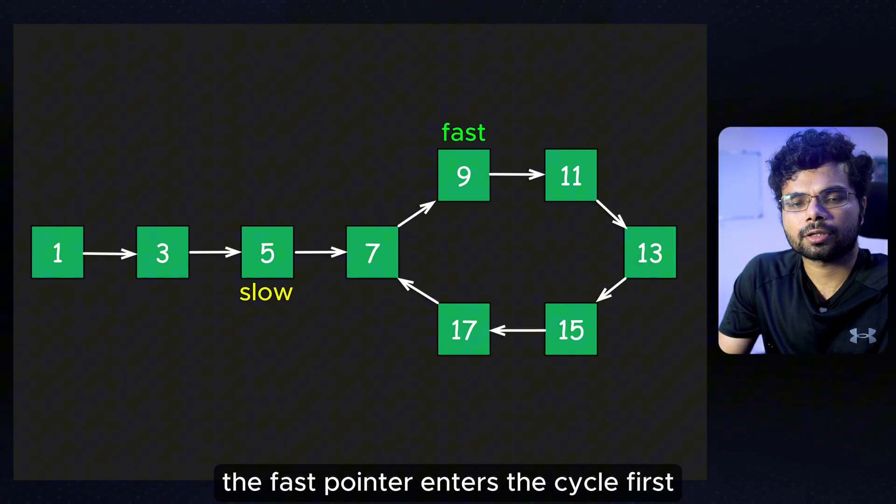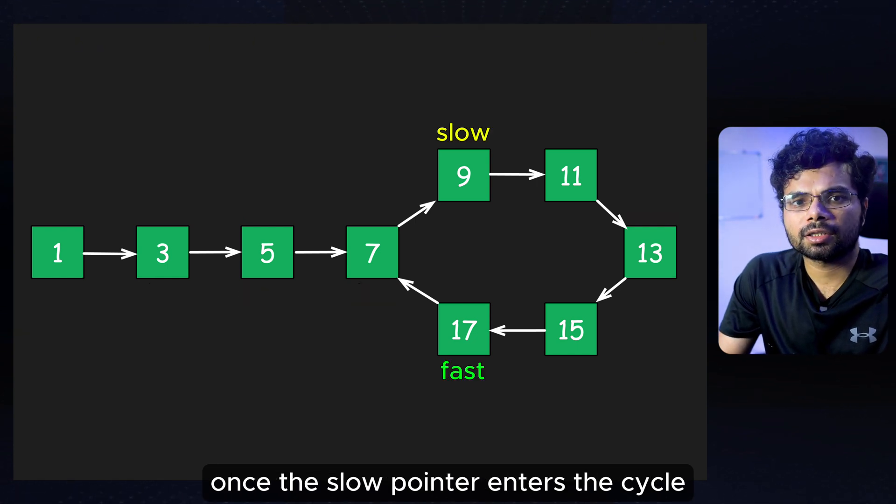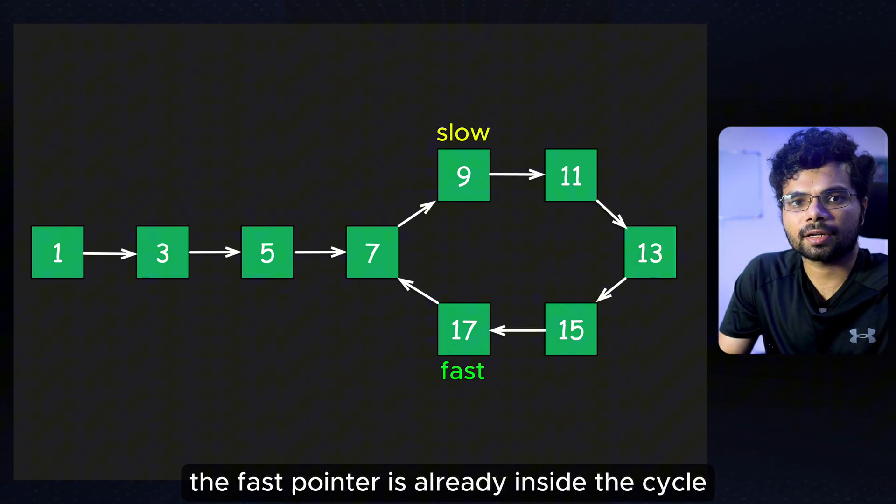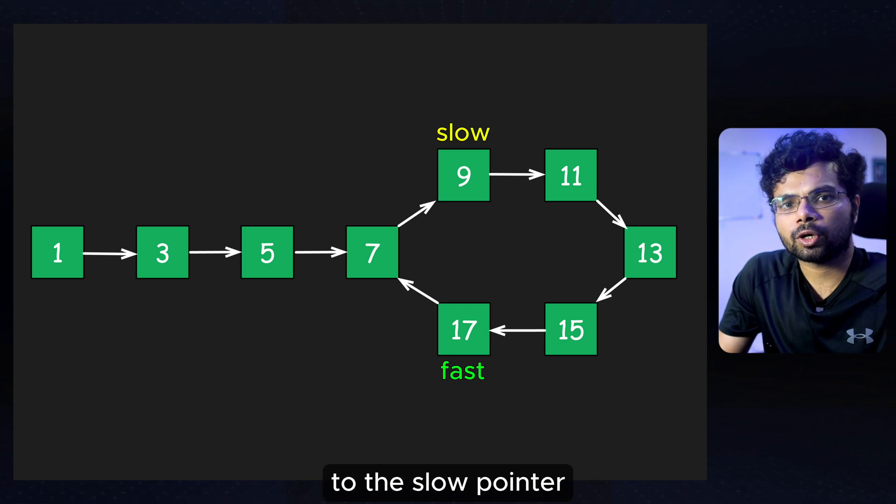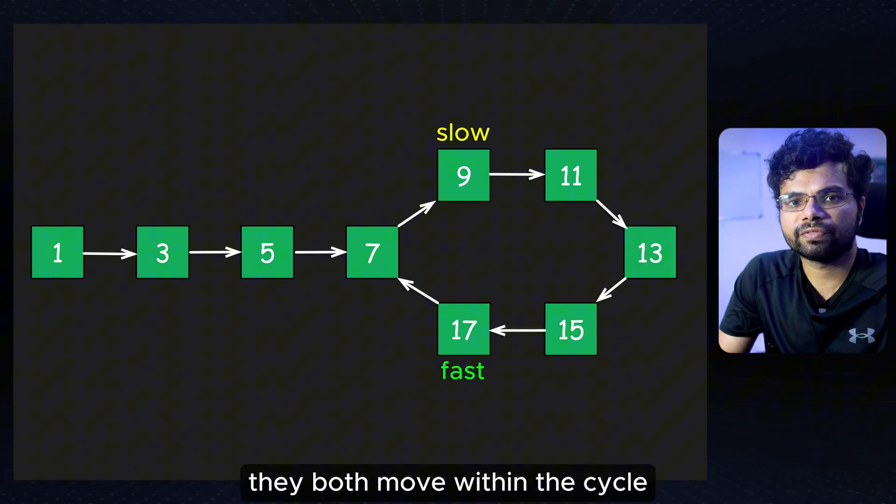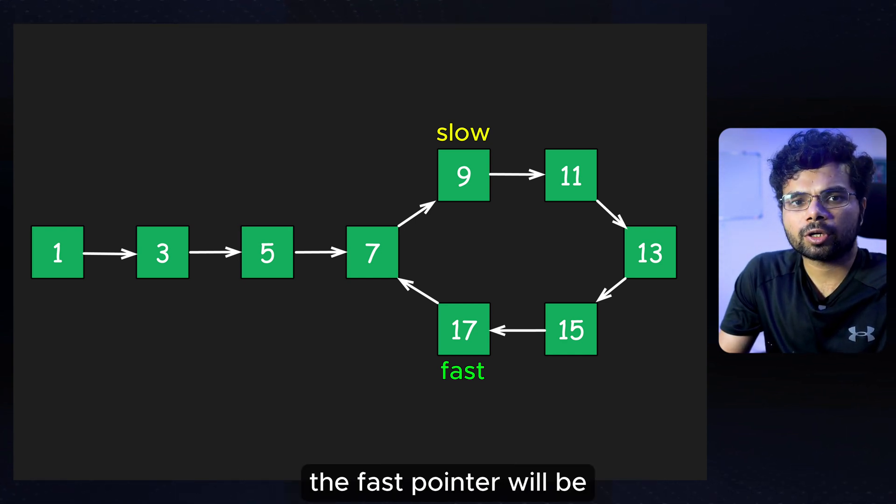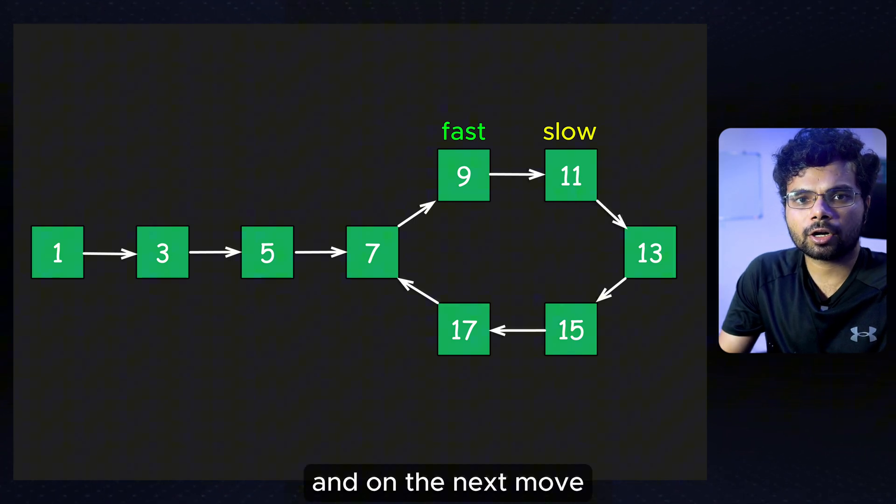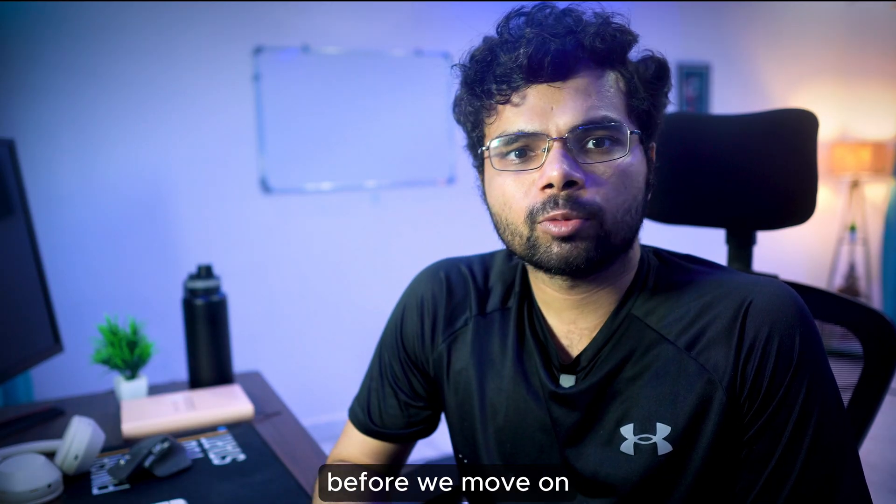The fast pointer enters the cycle first. Once the slow pointer enters the cycle, the fast pointer is already inside the cycle. The fast pointer gets closer to the slow pointer by one step each time they both move within the cycle. Eventually, the fast pointer will be right behind the slow pointer. And on the next move, they will meet.